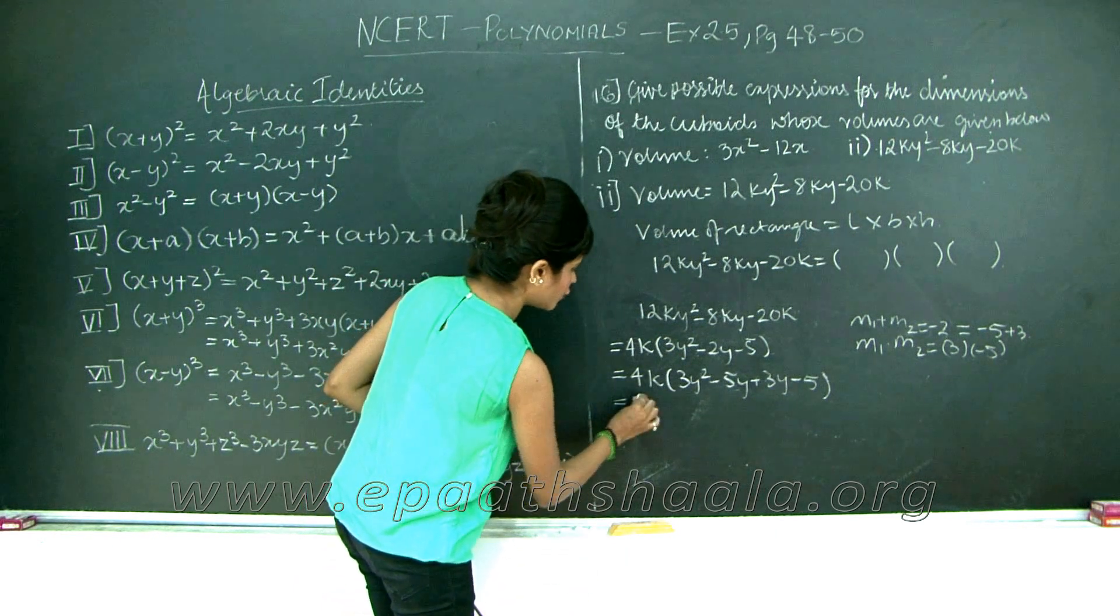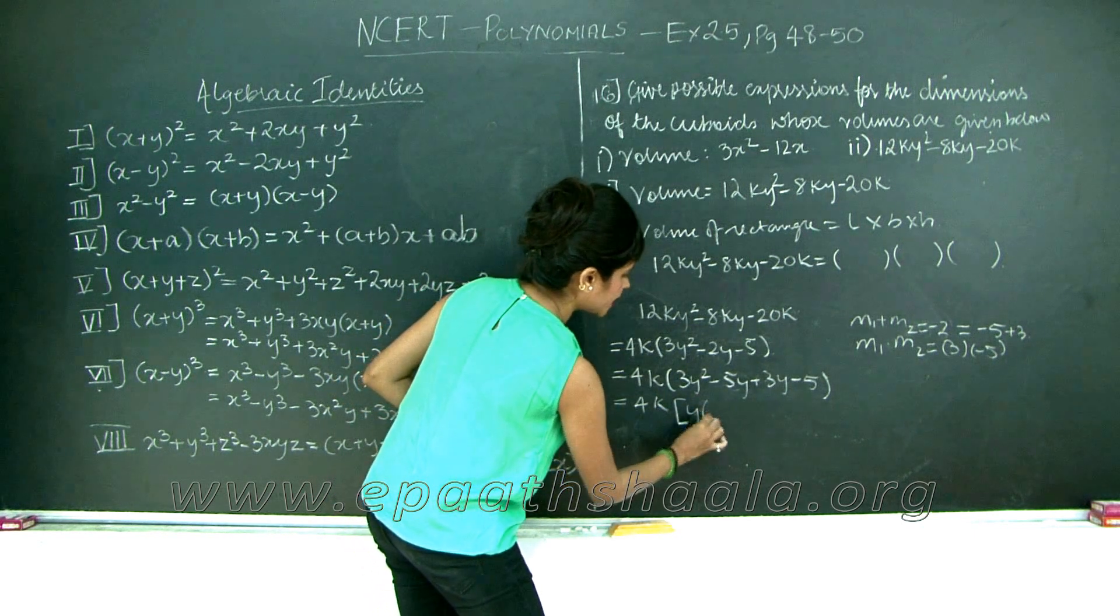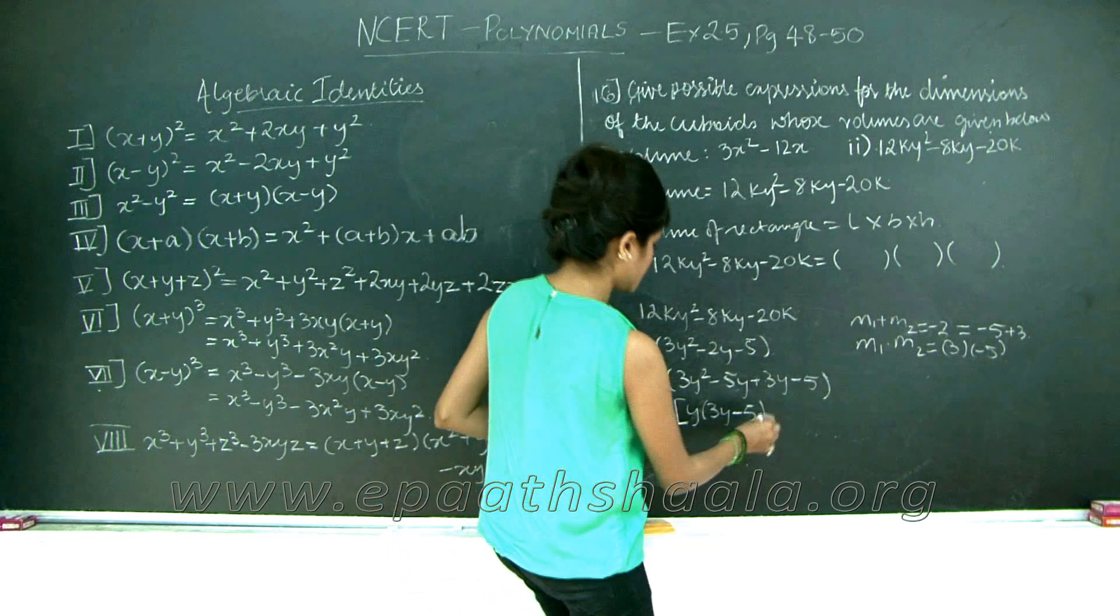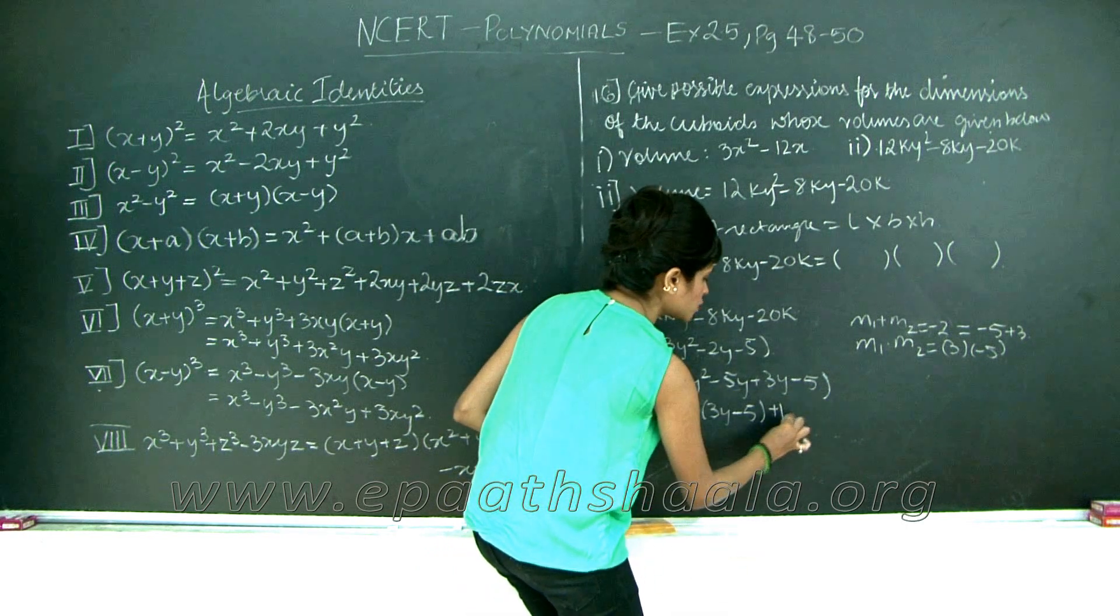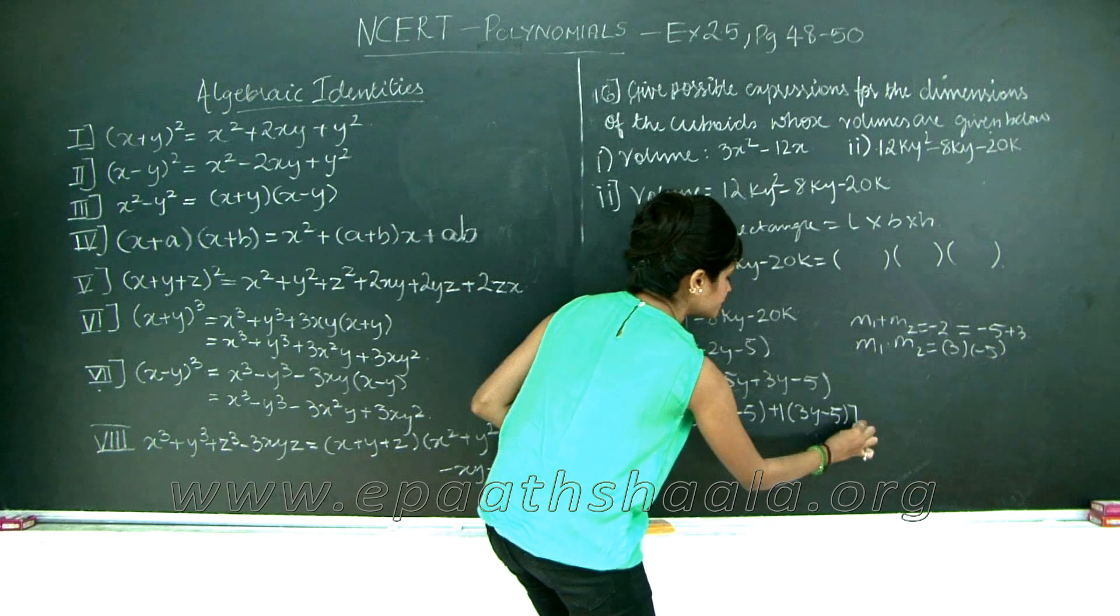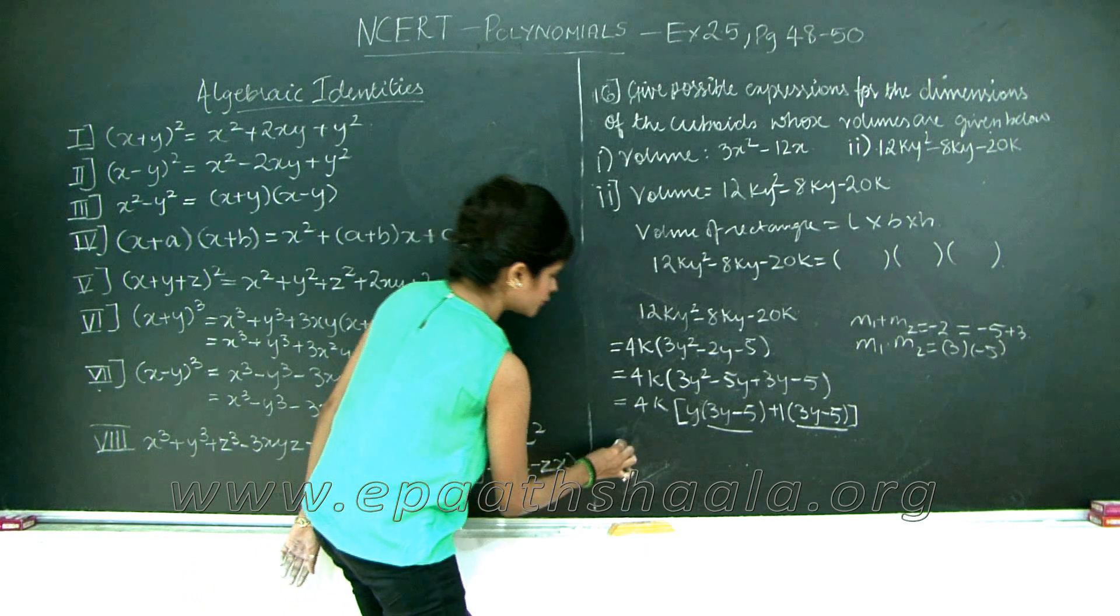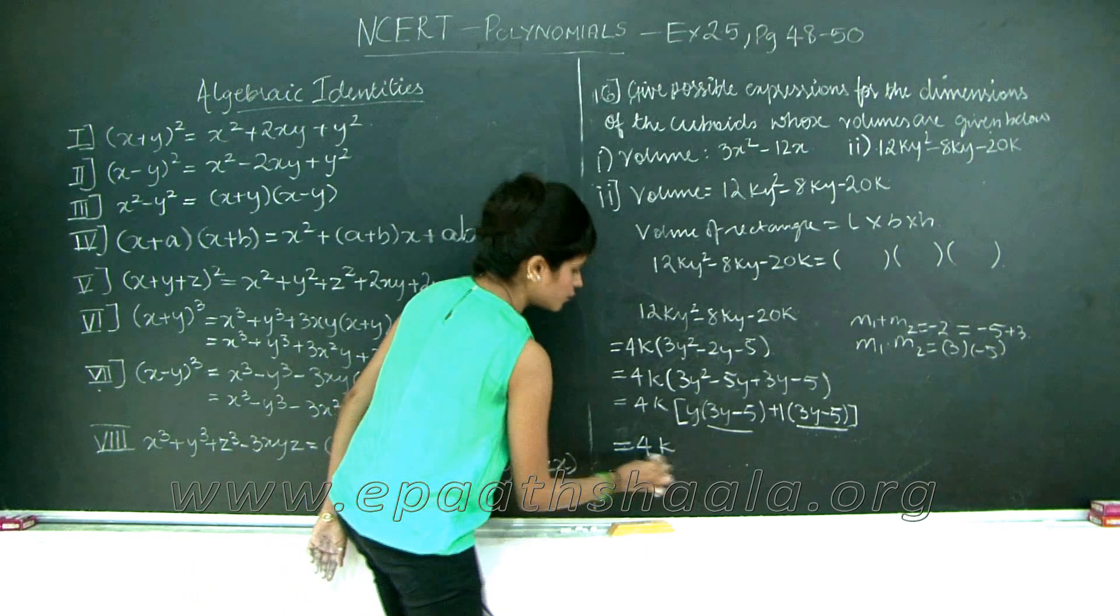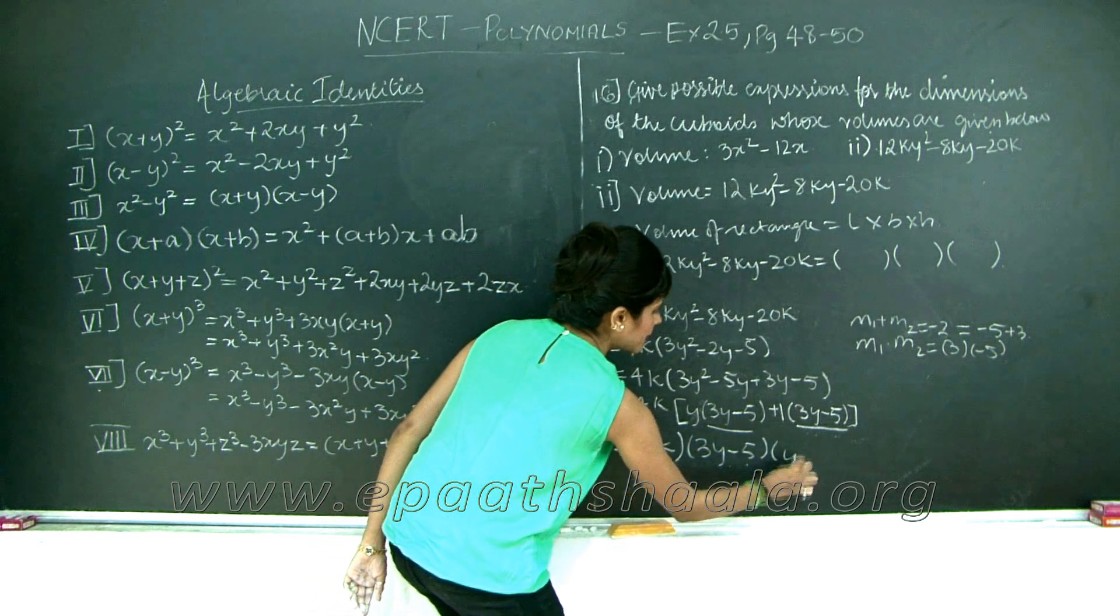What is common over here? I will keep 4k as it is. There is y common here. I get 3y minus 5 plus there is nothing common between these two terms except for one, so plus 1 into 3y minus 5. And 3y minus 5 is common for these two terms, so I take that out common. So I get 4k into 3y minus 5 into y plus 1.